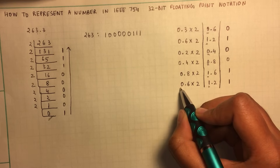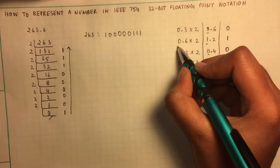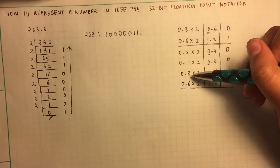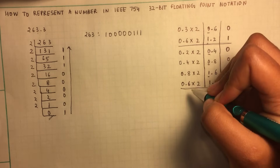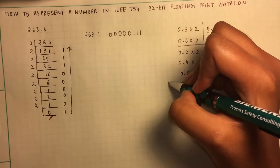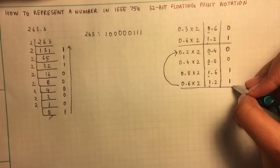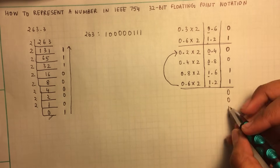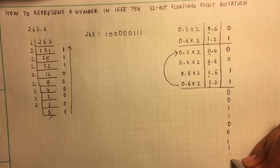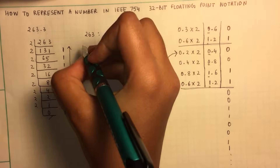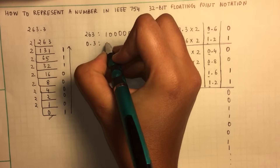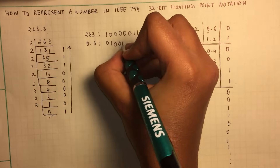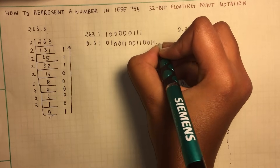Now you can observe that this step is essentially the same as a previous step. So after 0.6 you would again follow the same steps and it would loop again. So the tracked digits column would be 0, 0, 1, 1, repeating. Therefore 0.3 in binary representation would be 0.01001100110011 and so forth — a repeating pattern.